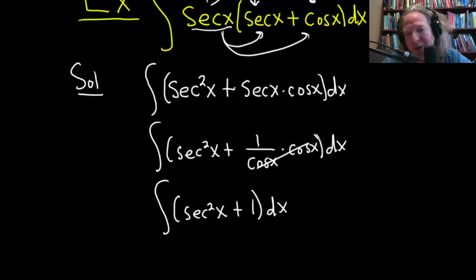Likewise, cosine is 1 over secant. So you could have done it that way too. And the secants would have canceled. That would have been a perfectly acceptable way to do it.